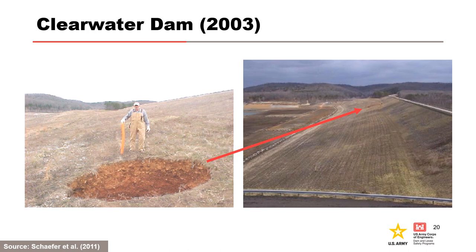These photos are from the Corps of Engineers Clearwater Dam in Missouri in 2003. A 10-foot wide and 10-foot deep sinkhole formed on the upstream face at elevation 570, following the record pool of elevation 568. It took about two weeks for the reservoir to recede to elevation 560, and about two and a half months to recede back to normal levels. The sinkhole was probably the result of long-term, intermittent internal migration of shell and natural alluvial material into the karst foundation, and more intense internal migration when the reservoir was high.